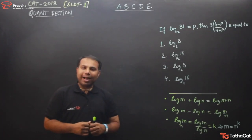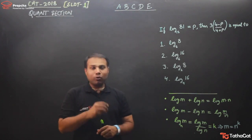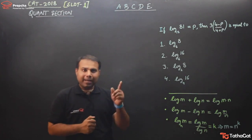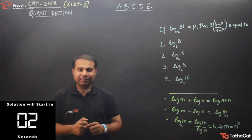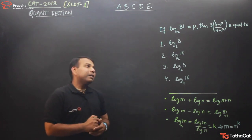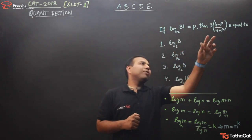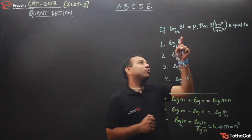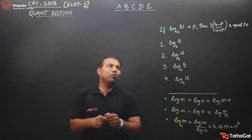Here is another question from CAT 2018 slot 1, based on log — the second of three log questions in this slot. Pause the video and solve it on your own first. This question says: log of 81 to the base 12 is equal to p, and we have to find the value of a given expression. No need to panic — let's work through what we can do with this.